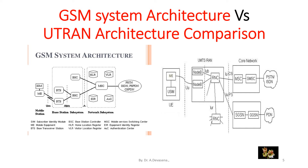Let us compare these two architectures. In the GSM system architecture, the mobile station comprises of SIM and ME, that is mobile equipment. In the UTRAN, it is represented as UE, that is user equipment. In the GSM system architecture, we have a base station subsystem. In the UTRAN architecture, we will be having a radio network controller, that is UTRAN RAN.